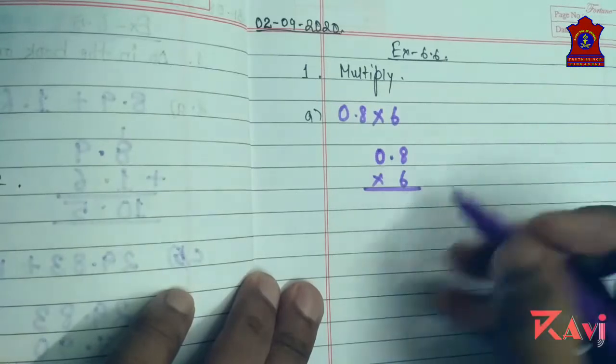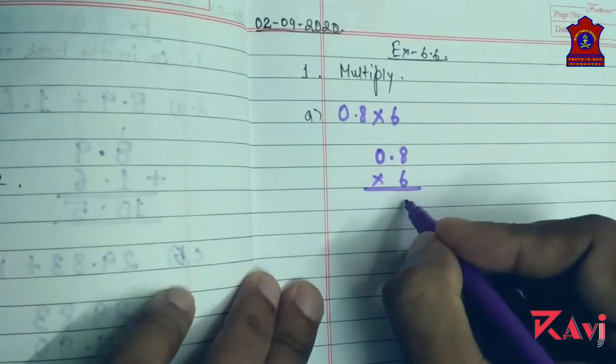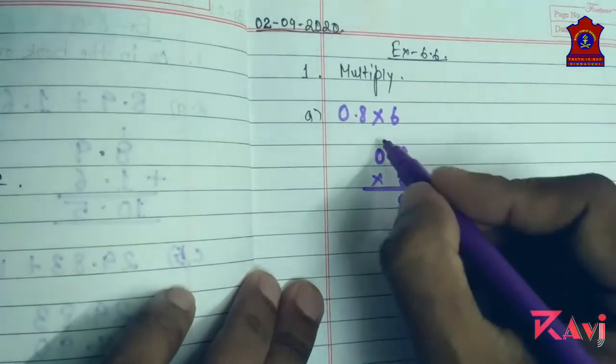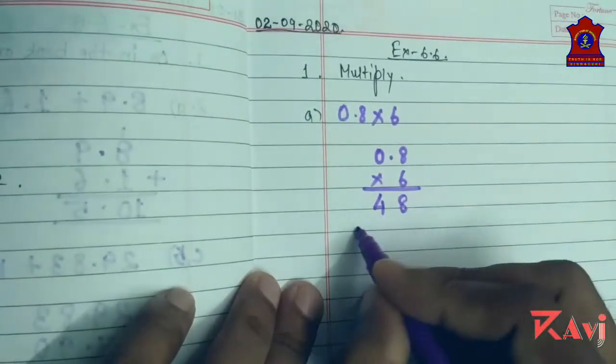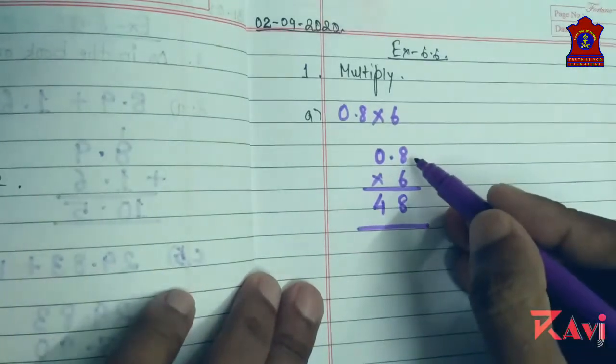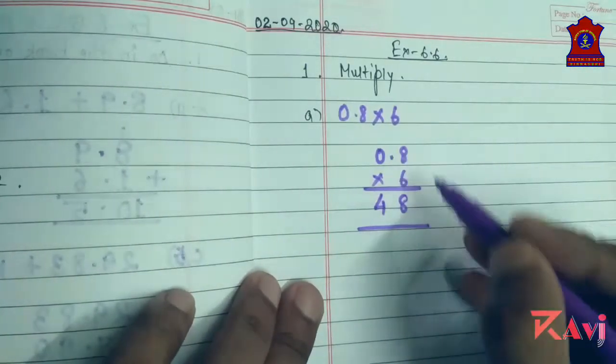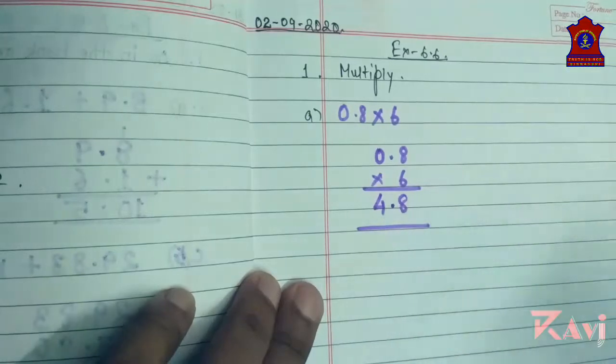See now, there is a decimal after a digit, so put a decimal after a digit in the answer. So the answer will be four point eight. Clear.